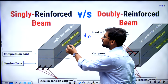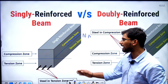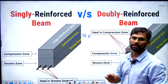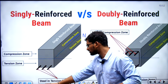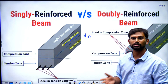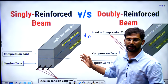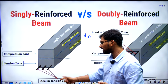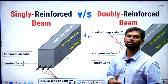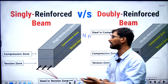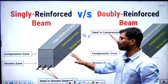Above the neutral axis, we call it the compression zone, and below the neutral axis, it is called the tension zone. In this tension zone, we provide the main reinforcement — steel in the tension zone — which is called the main tension steel. So, if tensile stresses develop, the reinforcement steel is placed in the tension zone, and for compressive stresses, the concrete handles the compression zone. It is possible to transfer the load through combined action.